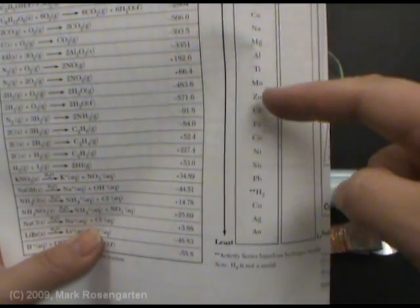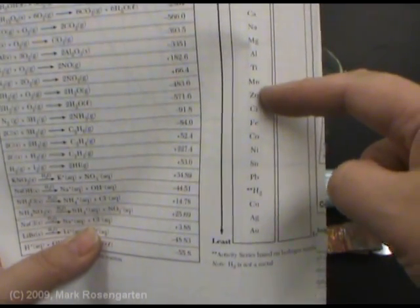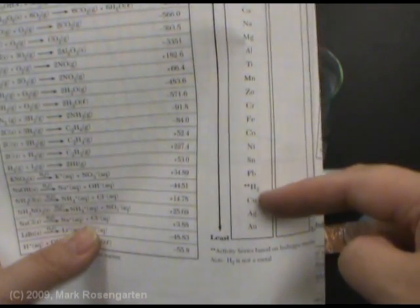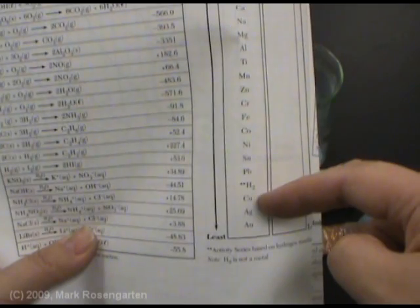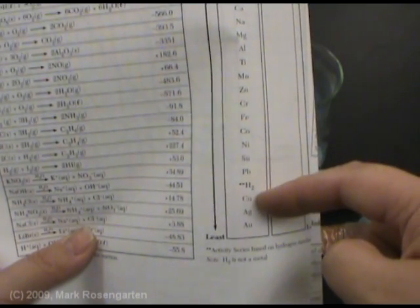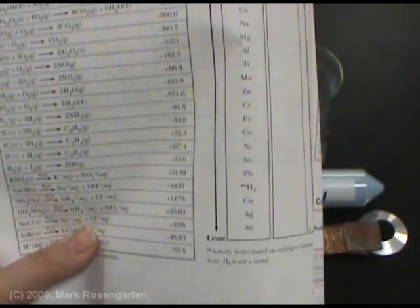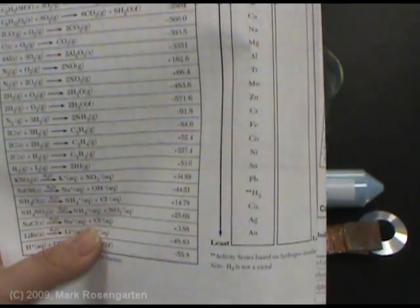According to reference table J, zinc is a much more active metal than copper is. Therefore, zinc should be able to replace copper in a copper compound, but copper should not be able to replace zinc in a zinc compound. Let's put that to the test.